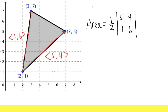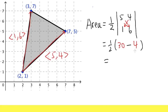For the determinant right here, just go ahead and do this times this and this times that, and you subtract. So you get one-half times the quantity: five times six is 30, and then minus one times four, that's nicely equal to four. Work that out — that's 26 divided by two. We will end up with 13.